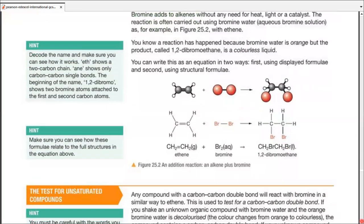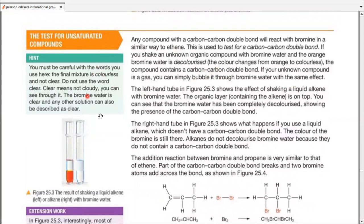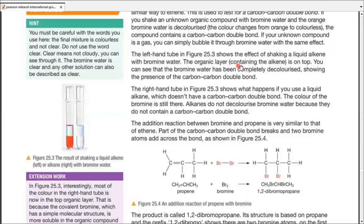Let's move on to the next paragraph at the bottom. It tells you the same thing. This is a test for unsaturated compounds. You must be careful with the words you use here. The final mixture is colorless and not clear. Do not use the word clear. Clear means not cloudy. You can see through it. Bromine water is clear, and any other solution can also be described as clear. But not in this case.